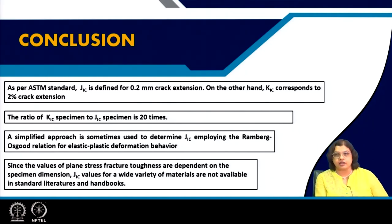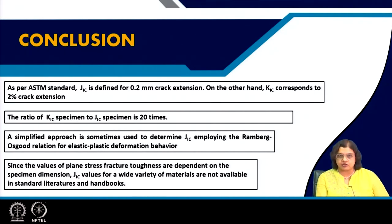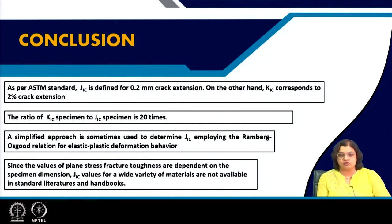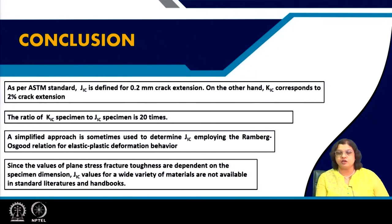Of course, if we have a ductile material that undergoes significant plastic deformation ahead of the crack tip, we cannot use K1c testing. Then we do need J1c testing, and in practice we often need to perform J1c testing in the actual condition for the actual specimen or component dimension and configuration to find the exact values. That makes the concept of J integral very very useful, and we should have a good understanding of it.